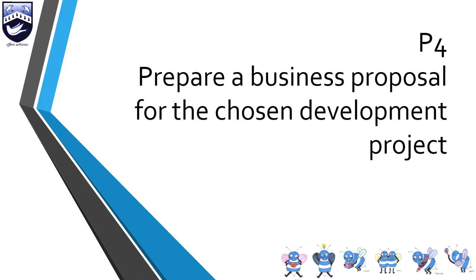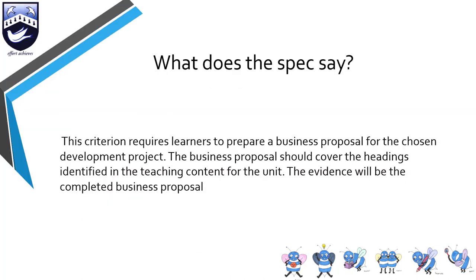Welcome to this teaching video on P4 for Unit 17 Cambridge Technicals. For P4, you need to prepare a business proposal for your development project. You've just done M2, so it should be very clear what your project is. This is you now putting it into a proposal for the Gatwick Hotels Association. The specification says this criteria requires you as the learner to prepare a business proposal for the chosen development project, covering the headings identified in the teaching content for the unit.